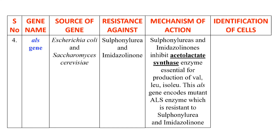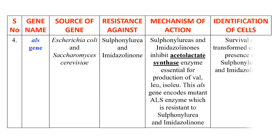Acetolactate synthase is essential for the production of the amino acids valine, leucine, and isoleucine. The ALS gene encodes a specific ALS enzyme which is resistant — again, it is a mutant enzyme — so it is resistant to these two herbicides and will not be inhibited by them.